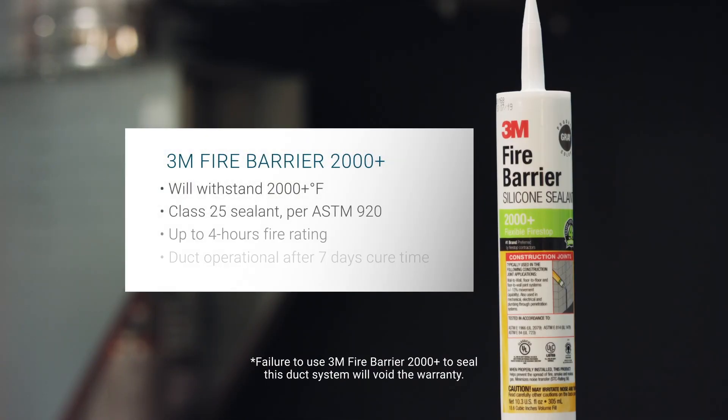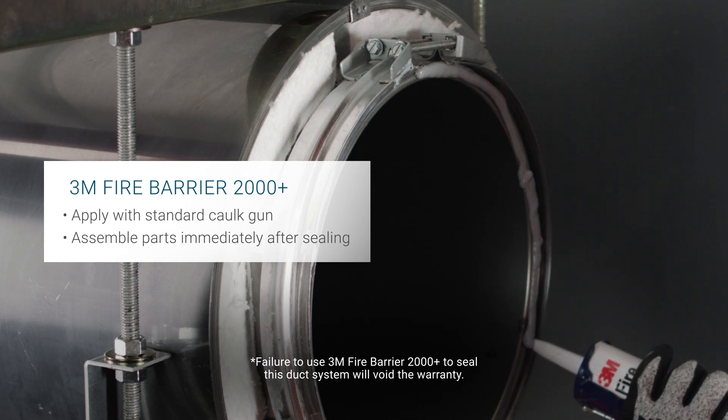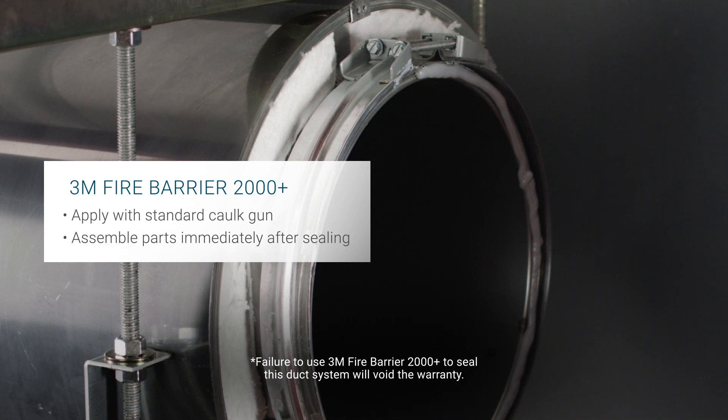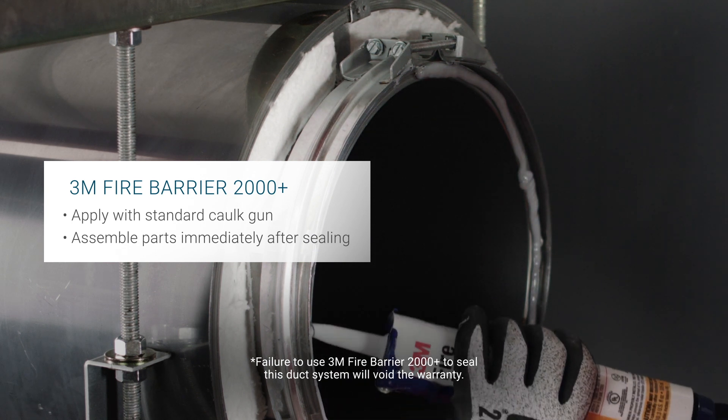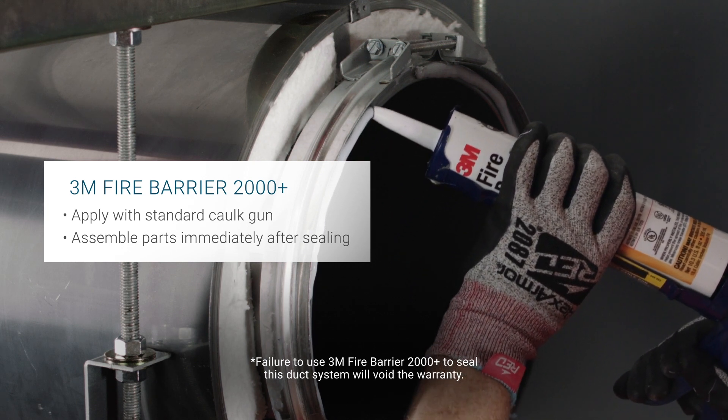Per the listing, 3M Fire Barrier 2000 Plus is the only sealant that may be used to seal this duct system. Sections must be clean, dry, and frost-free before sealing. When installed properly, this sealant will seal a duct system so it is leak-free, and at the same time will control the spread of fire before, during, and after exposure to open flames.